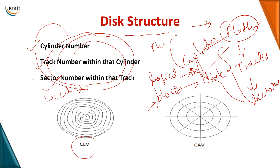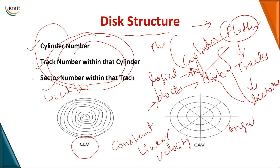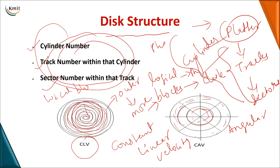There are two variations for storing data on a disk: CLV (constant linear velocity) and CAV (constant angular velocity). In CAV, the number of sectors in every track is the same regardless of whether it is an inner or outer track. This means more bits are densely packed in inner tracks and dispersed in outer tracks. In CLV, data is stored in a spiral form — as you move from inner to outer tracks, more data is stored in the outer tracks compared to the inner tracks.